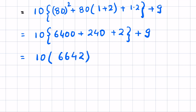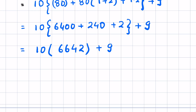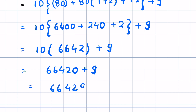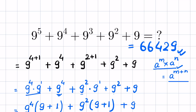So 10 times 6642 gives 66420, plus 9 gives 66429. So this is our answer: 66429. Like and subscribe, thanks for watching.